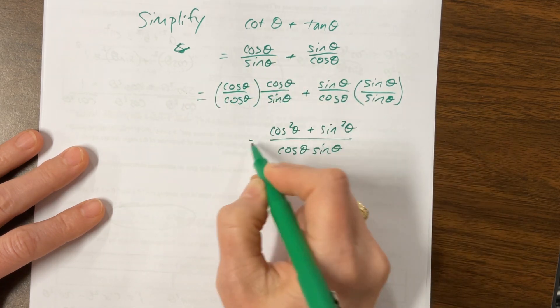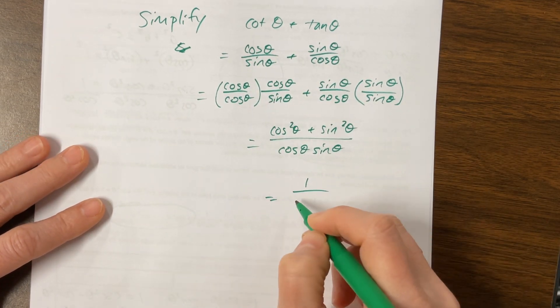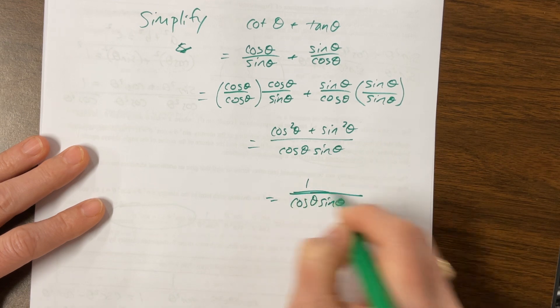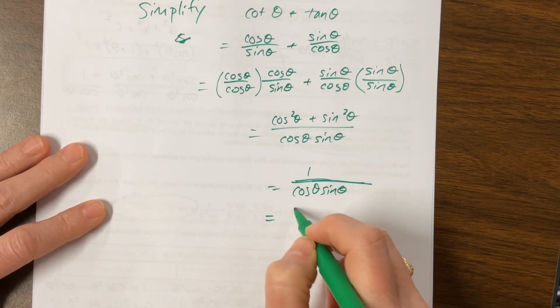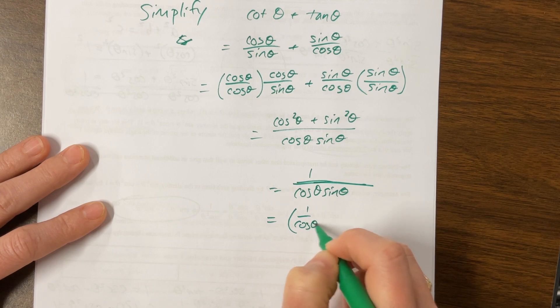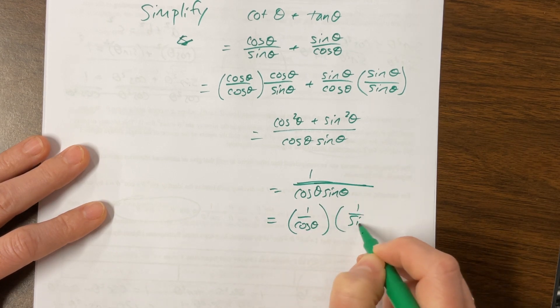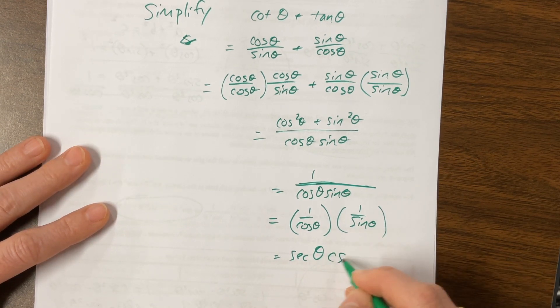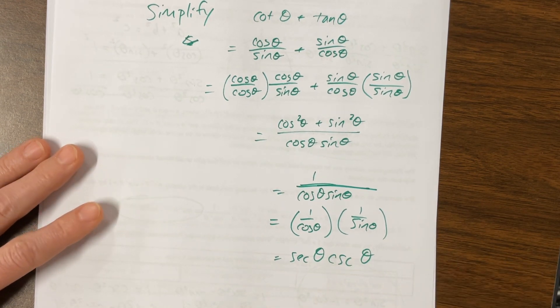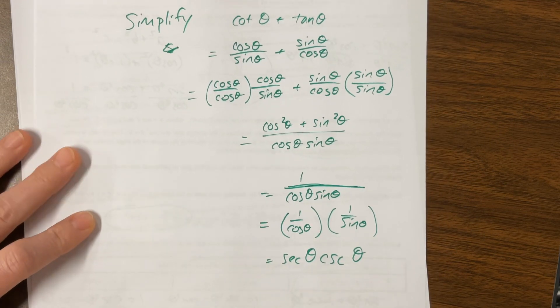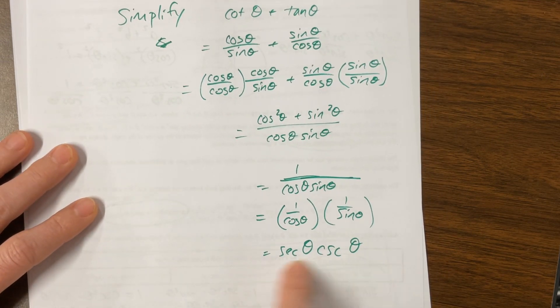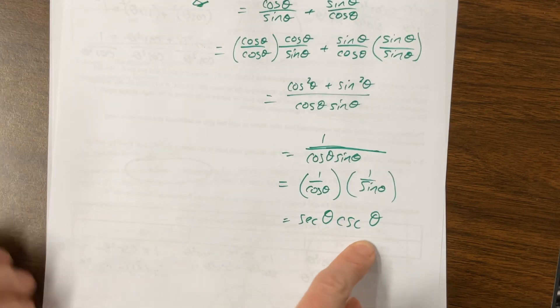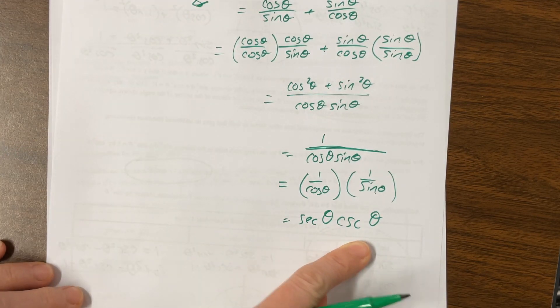And what we just learned is that sine squared plus cosine squared or cosine squared plus sine squared is equal to one. That's the Big Daddy. So that's one over cosine theta times sine theta. And then this can be written as one over cosine theta times one over sine theta. One over cosine theta is secant theta. One over sine theta is cosecant theta. And so it could be that they ask us to write this in terms of secant and cosecant only. And so this cotangent plus tangent would be equivalent to secant theta times cosecant theta.